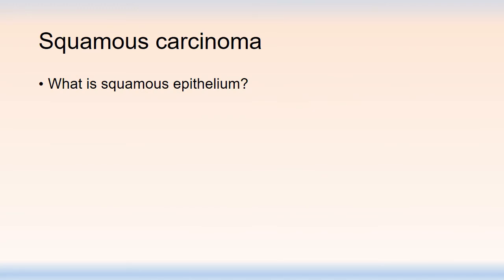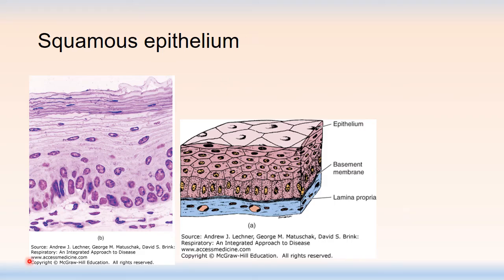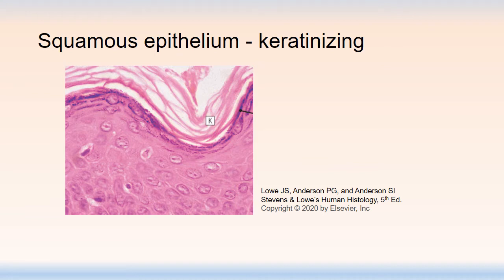Moving along to squamous carcinoma, let's talk about squamous epithelium itself. Stratified squamous epithelium starts with a basal layer that, as it matures and terminally differentiates, flattens out, providing a very nice protective layer of squamous mucosa. On the skin surface we have an additional layer of keratin that provides extra protection and a waterproof barrier — both to keep internal water inside and to keep external water from entering. This keratin layer is a defining feature of squamous epithelium that lines our skin, and that will be very important when we talk about squamous tumors.